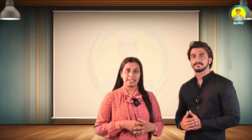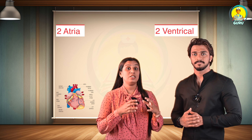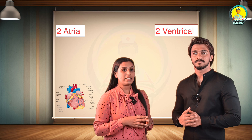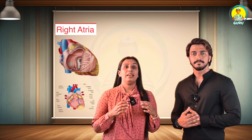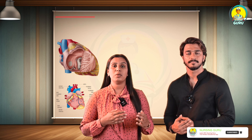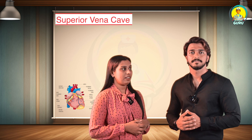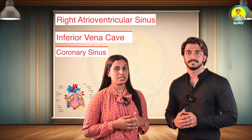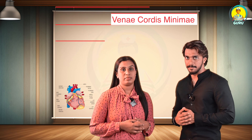The heart has four chambers: two atria and two ventricles. The two atria are the receiving areas and the two ventricles are the discharging chambers. The right atrium forms the right border, part of the sternocostal surface, and the base of the heart. At the junction between the right atrium and right auricle is a vertical groove called the sulcus terminalis, which internally forms the crista terminalis. Openings into the right atrium include the superior vena cava, inferior vena cava, coronary sinus, right atrioventricular opening, and the foramina venarum minimarum.